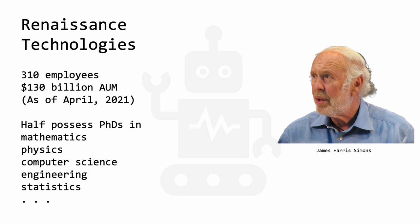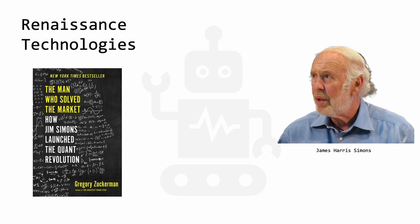This firm, as of April 2021, is reported to have about 310 employees, with assets under management of $130 billion. The firm is famous for having a preference for people not from the financial services industry — instead, with half of them possessing PhDs in mathematics, physics, computer science, engineering and statistics. To find out more about this very interesting man and firm, I highly recommend the book 'The Man Who Solved the Market: How Jim Simons Launched the Quant Revolution' by Gregory Zuckerman. It is a great read for all aspiring quants, as well as those who are curious about the industry.